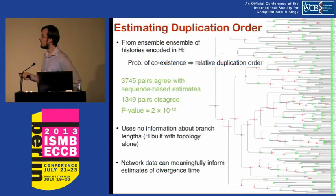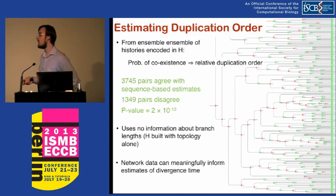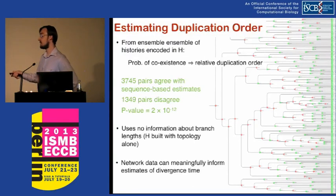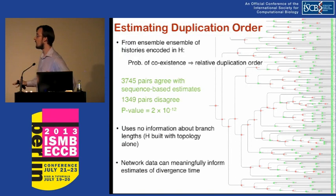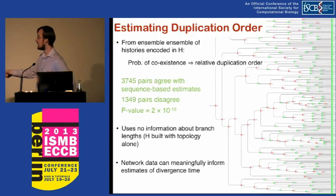Finally, we can use ancestral inference to estimate duplication order. From the ensemble of histories, we compute the probability of coexistence of any pair of vertices and use that to predict relative duplication order. We built this combinatorial structure without using phylogenetic branch lengths. Given only gene tree topology and network topology, about 3,700 pairs agree between sequence-based and network-based duplication order estimates, while only 1,300 disagree — a very high Kendall-Tau statistic. Networks can meaningfully inform estimates of divergence time.